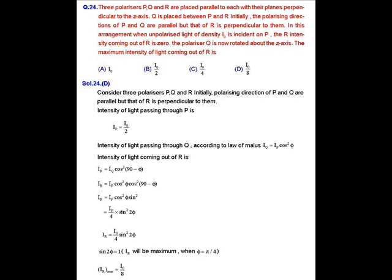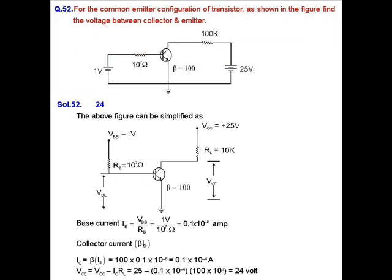So Ir = I₀/4 × sin²(2φ). Ir will be maximum if and only if sin(2φ) = 1, which means 2φ = π/2, so φ = π/4. If φ = π/4, then Ir will be maximum and its value will be I₀/4.